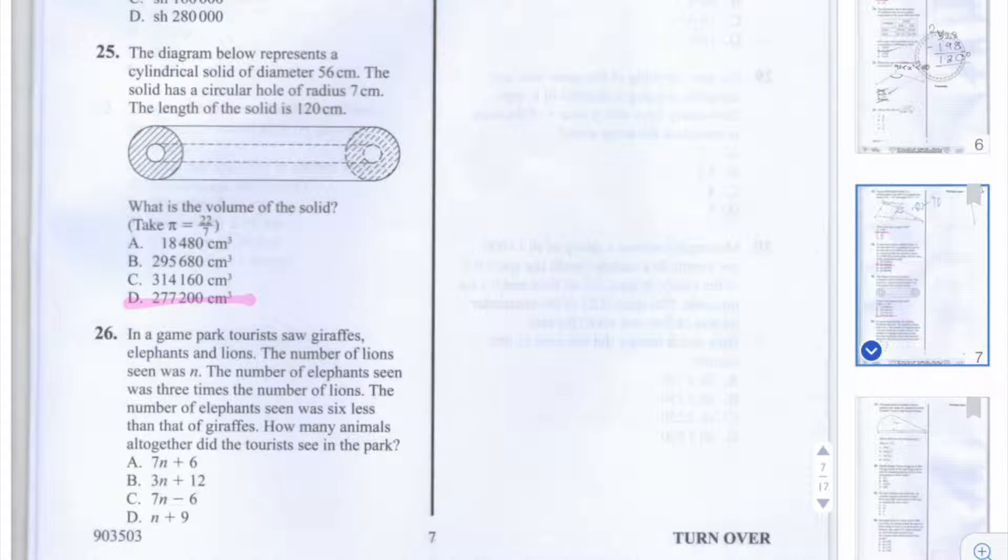Let's write separate expressions for the number of lions, elephants, and giraffes seen, and then we can sum those expressions to find the total.